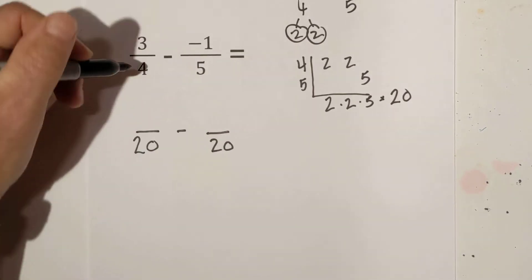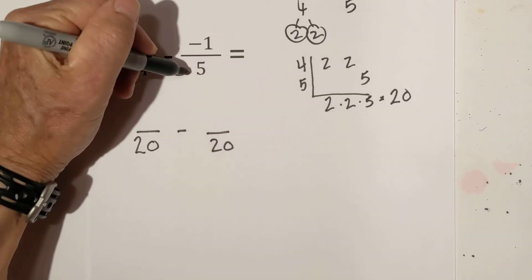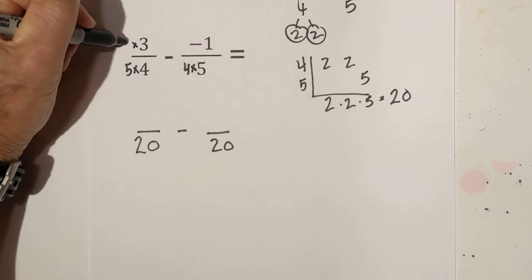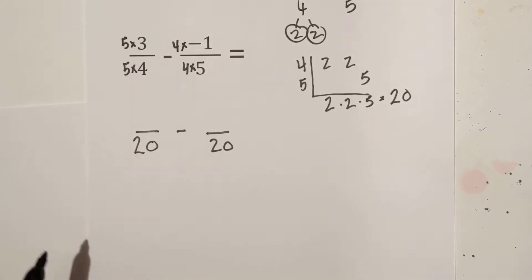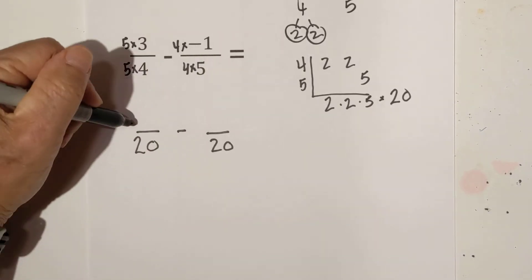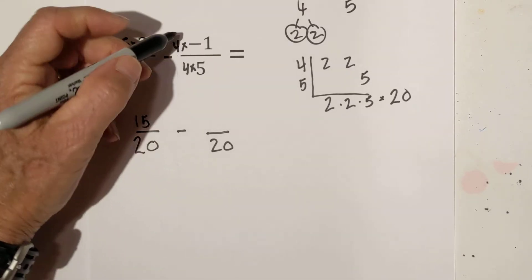So 4 goes into 20 5 times, 5 goes into 20 4 times so we are going to multiply 3 times 5 and the negative 1 times 4. So we have already done this. This is where the 20 comes from.